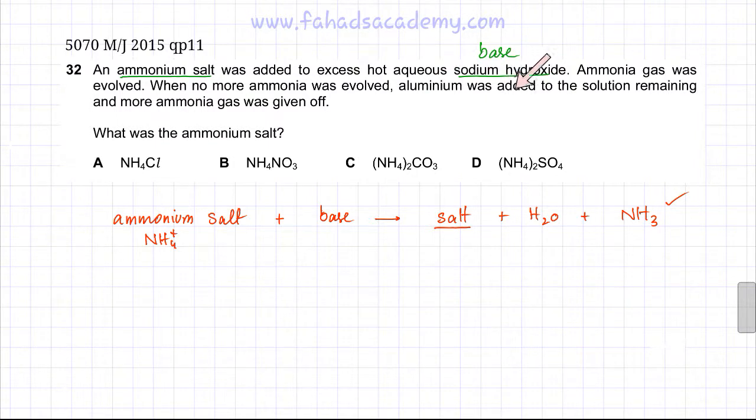He's then adding aluminium. Aluminium was added to the solution of this salt when the reaction is complete, and more ammonia gas was given off. So when he added aluminium to this salt, more ammonia gas was produced.